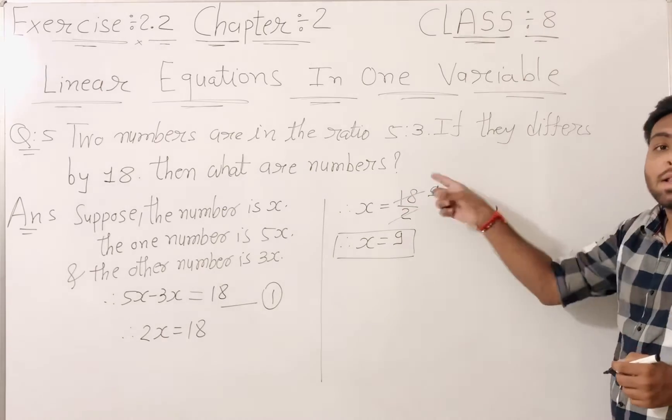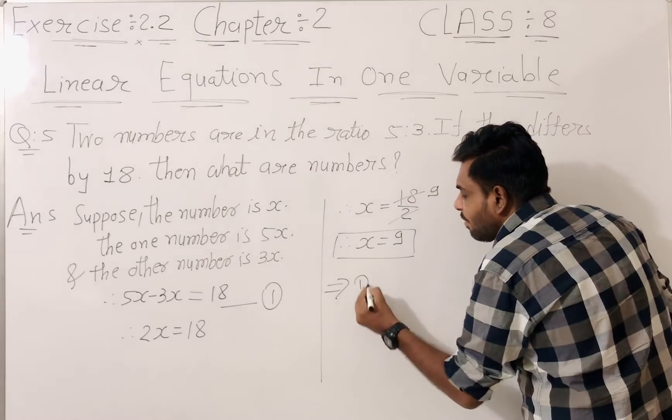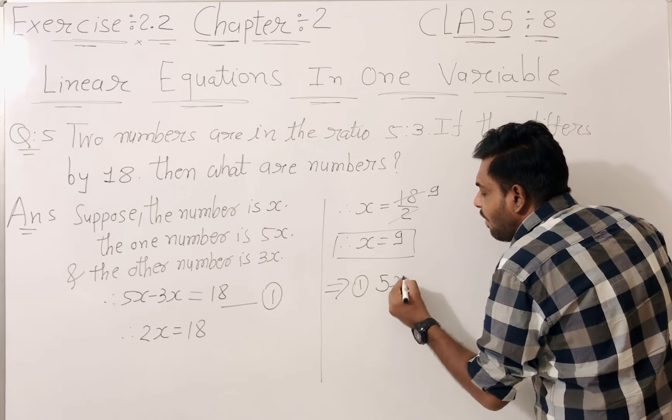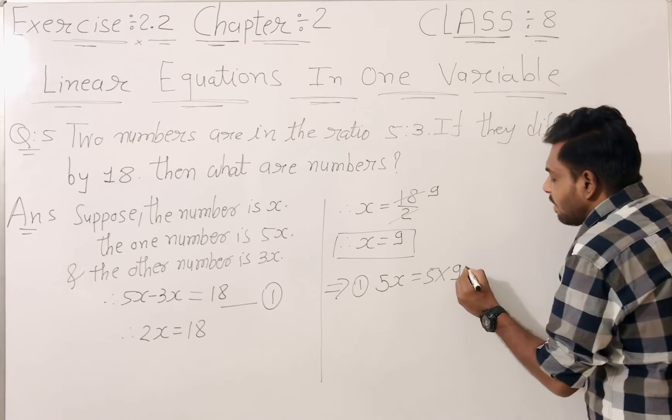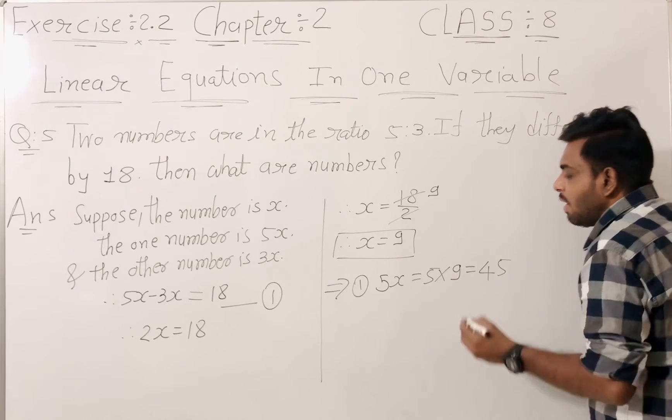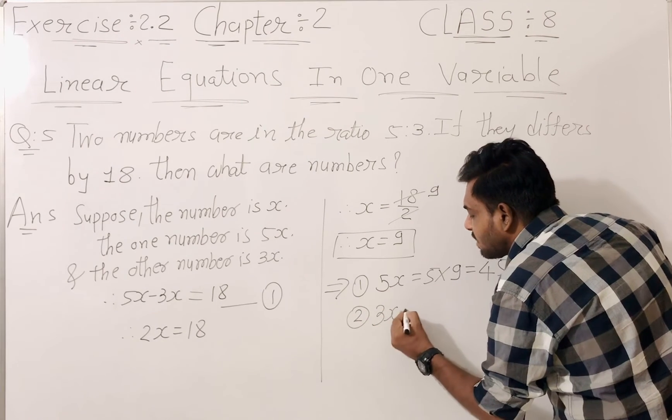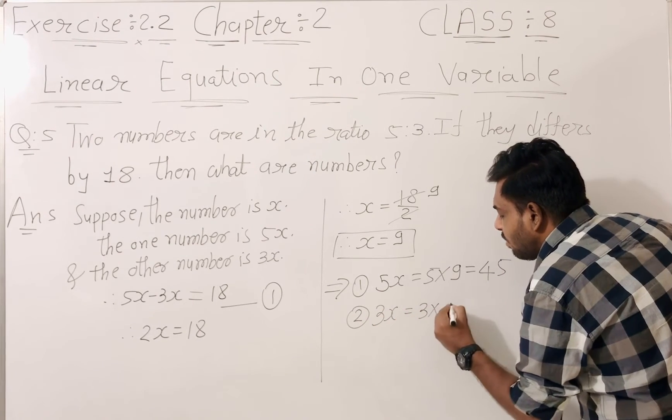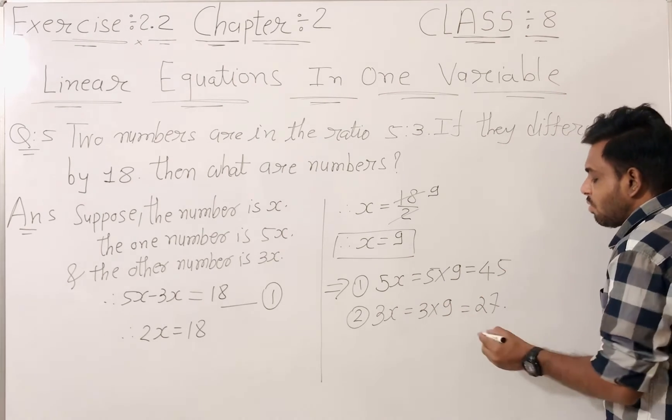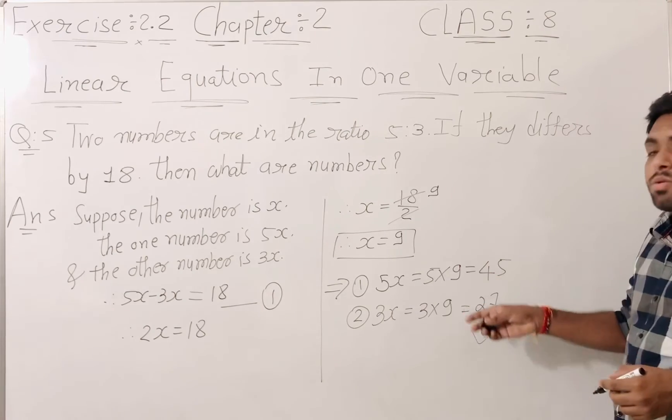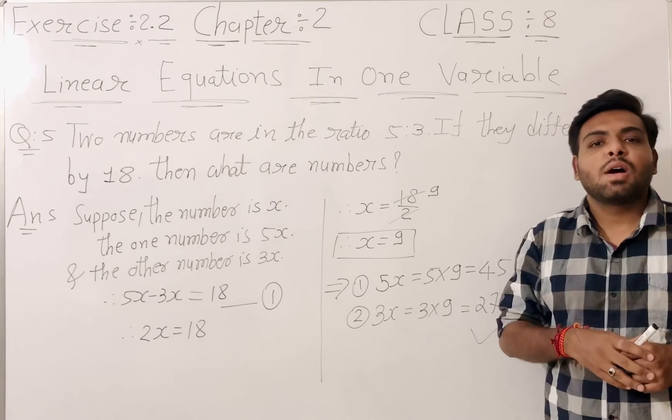Then what are the numbers? Here the first number is 5x. Then 5 into 9. 5 nines are 45. And the second number, 3 into x, 3 into 9, 3 nines are 27. These two are the answer of our question number 5.